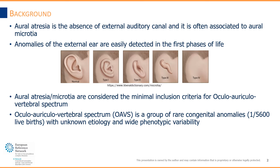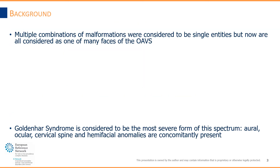Aural atresia and microtia are considered the minimal inclusion criteria for oculoauriculovertebral spectrum, which is a group of rare congenital anomalies with unknown etiology and wide phenotypic variability. In history, multiple combinations of malformations were considered to be single entities, but now are all considered as parts of the oculoauriculovertebral spectrum.